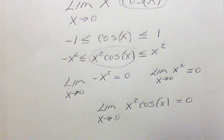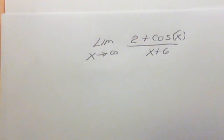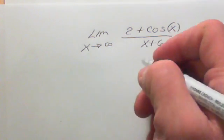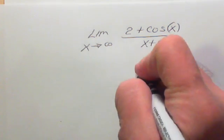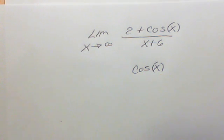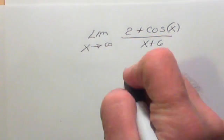Let's look at another one — this one is a little bit more complex. We're going to take the limit of (2 plus cosine of x) over (x plus 6) as x approaches infinity and try to solve that using the squeeze theorem. Again, start out with the cosine of x. You know the range of cosine of x will be between negative one and one, so it's greater than or equal to negative one and less than or equal to one.